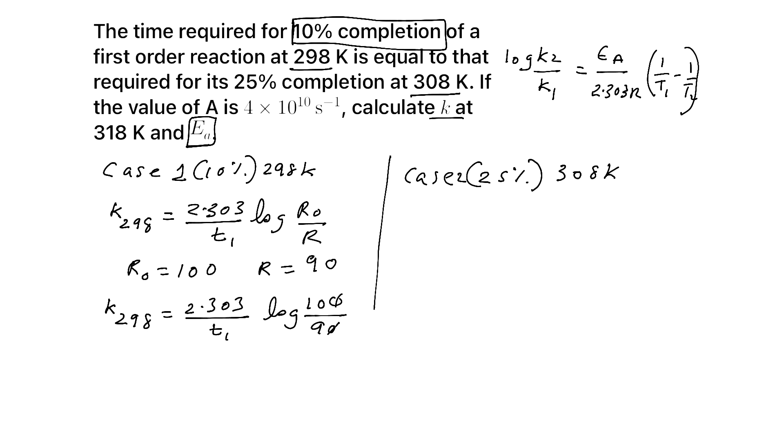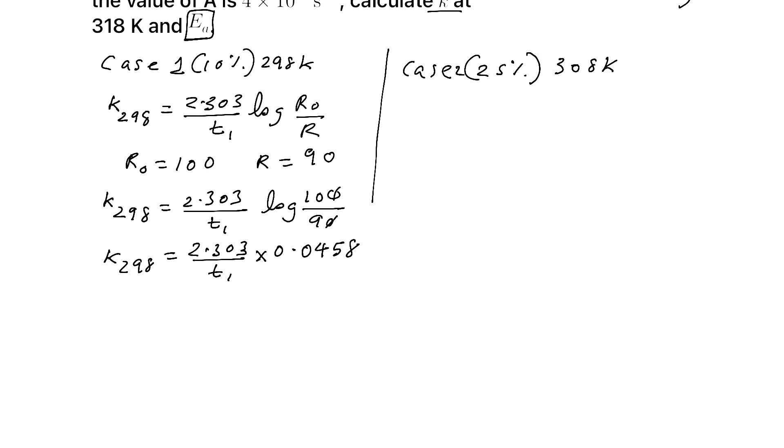So you can write k298 is equal to 2.303 by t1 log 100 by 90. Now, 10 by 9, you have to find the log. So k298 is equal to 2.303 by t1 log 10 by 9. On calculating, you will get 0.0458. Now what is the equation for t1? t1 is equal to 2.303 × 0.0458 by k × 298.